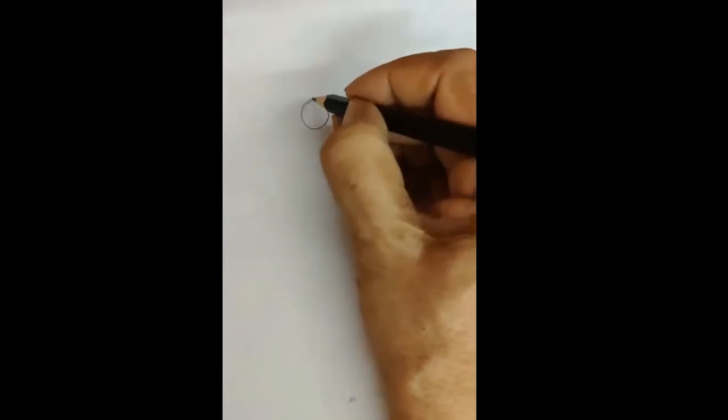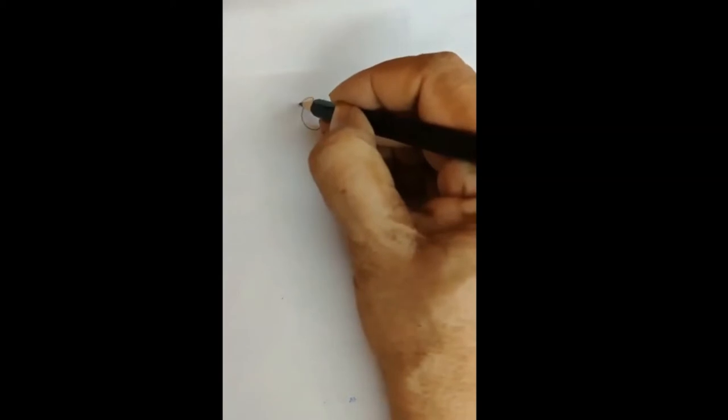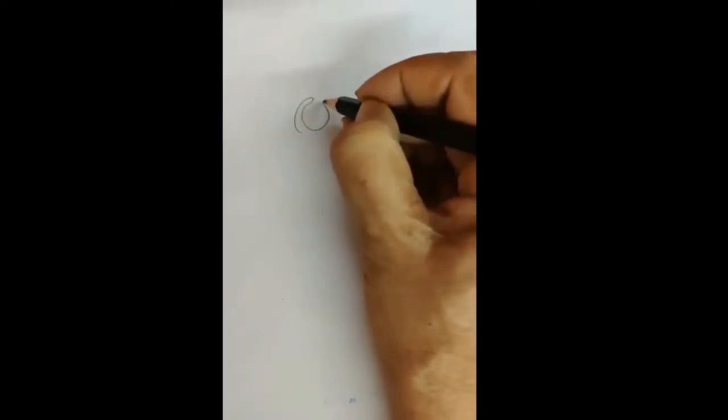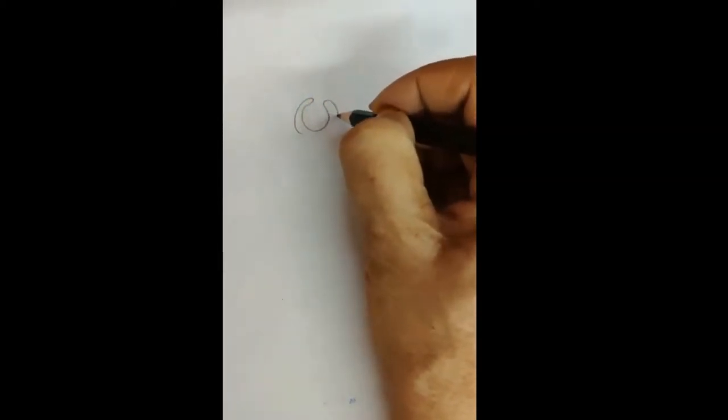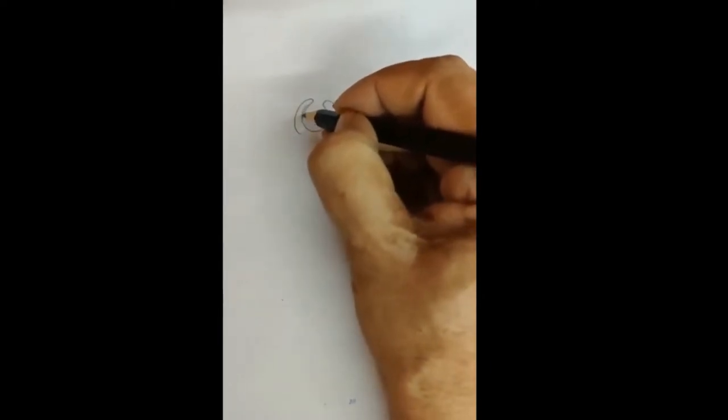Students, today we are going to draw the diagram of nephron. It's the microscopic unit which is present in the kidneys. About 1 million microscopic units are present in each of your kidney. Now this nephron has a tubular part.